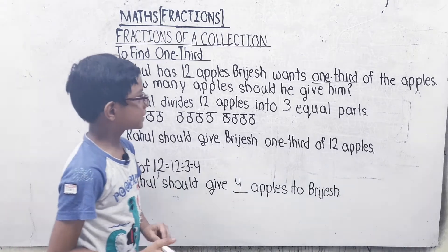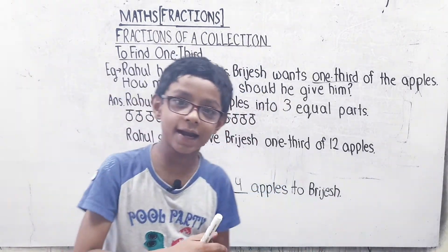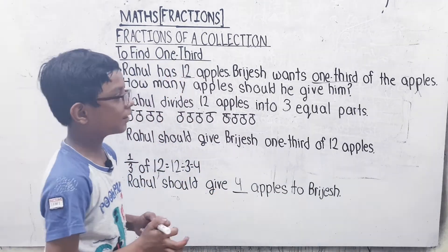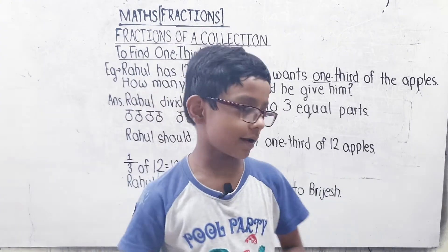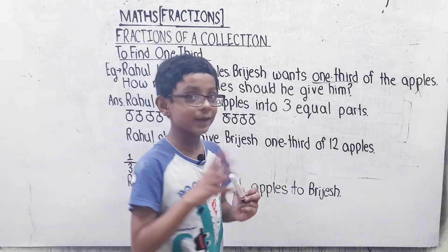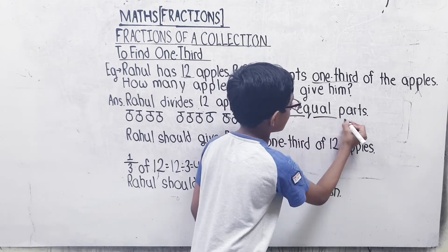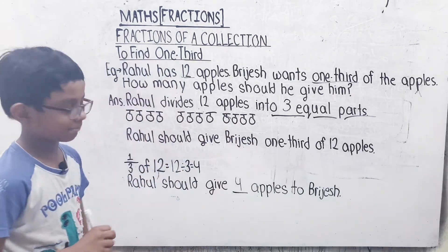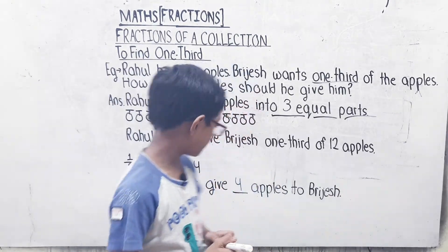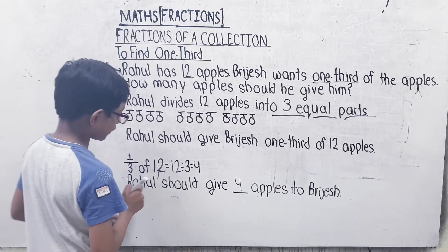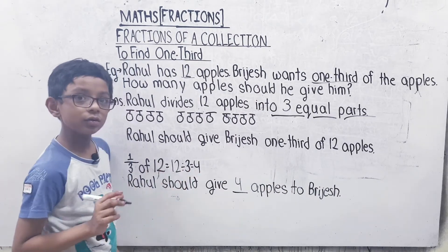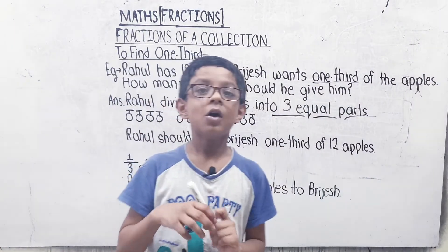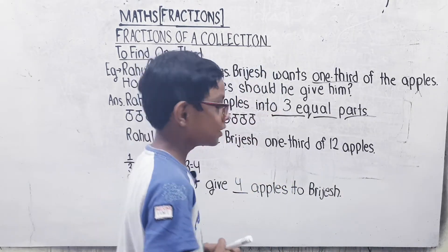Rahul has 12 apples. Bridges wants one-third of the apples. How many apples should he give? Rahul should divide 12 apples into 3 equal parts — 1 part, 2 part, 3 part. In each part there are 4 apples. So 1/3 of 12 equals 12 divided by 3 equals 4. Rahul should give 4 apples to Bridges.